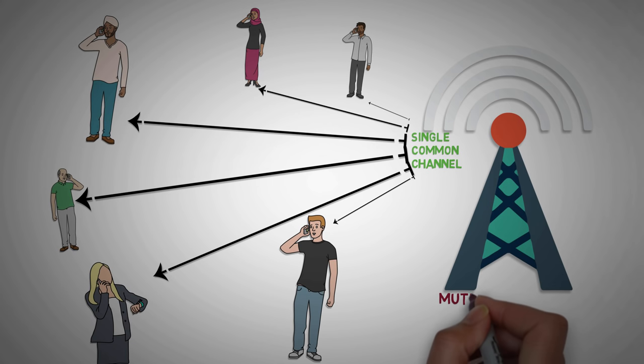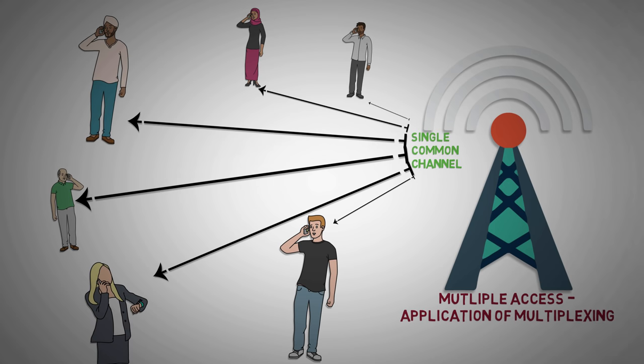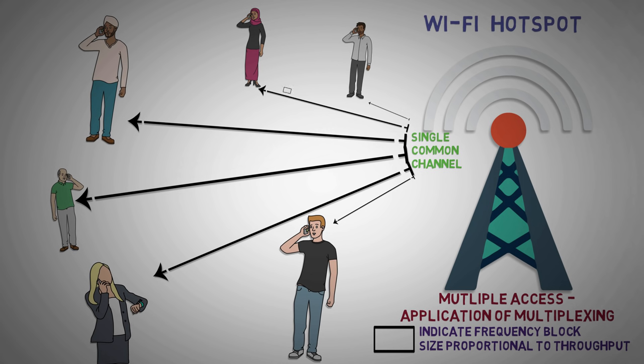In other words, multiple access is nothing but the application of multiplexing. Here's a Wi-Fi hotspot sharing its internet connection among multiple users by providing them a frequency block over which they can transmit and receive data. The greater the size of this block, greater is the throughput.